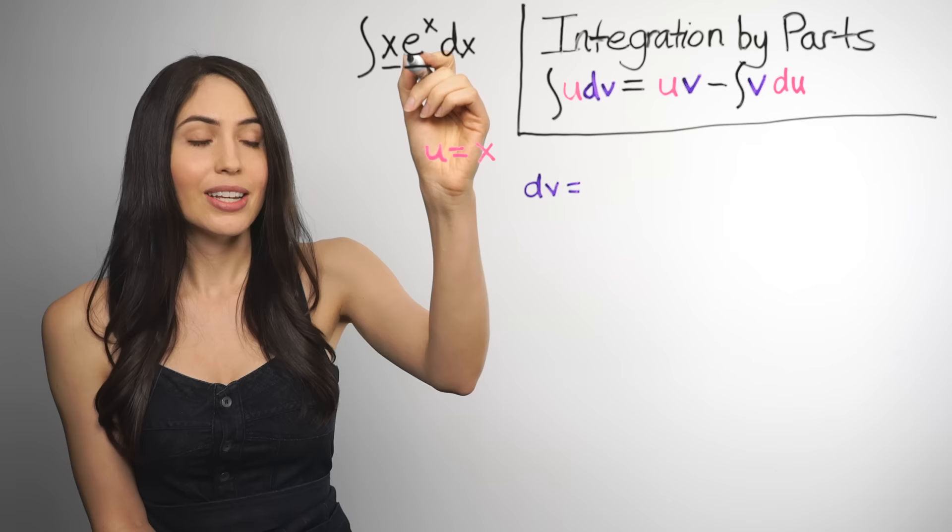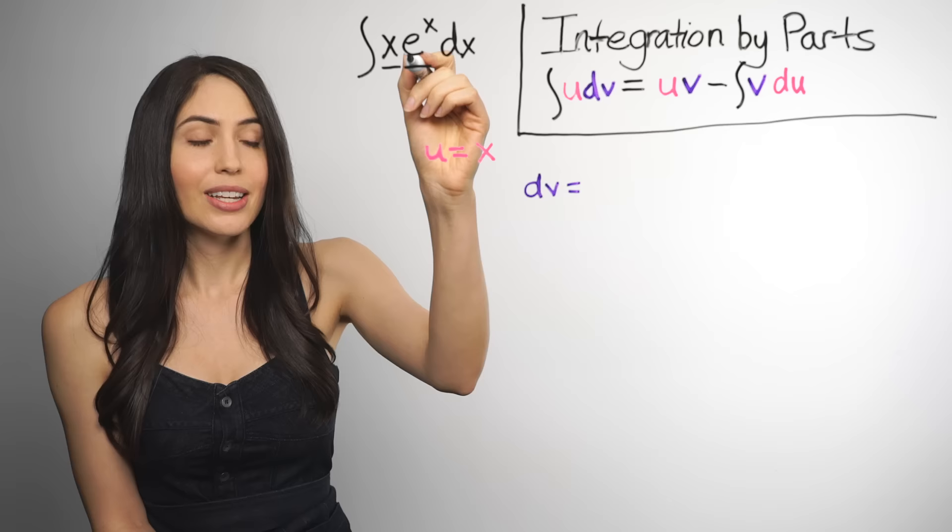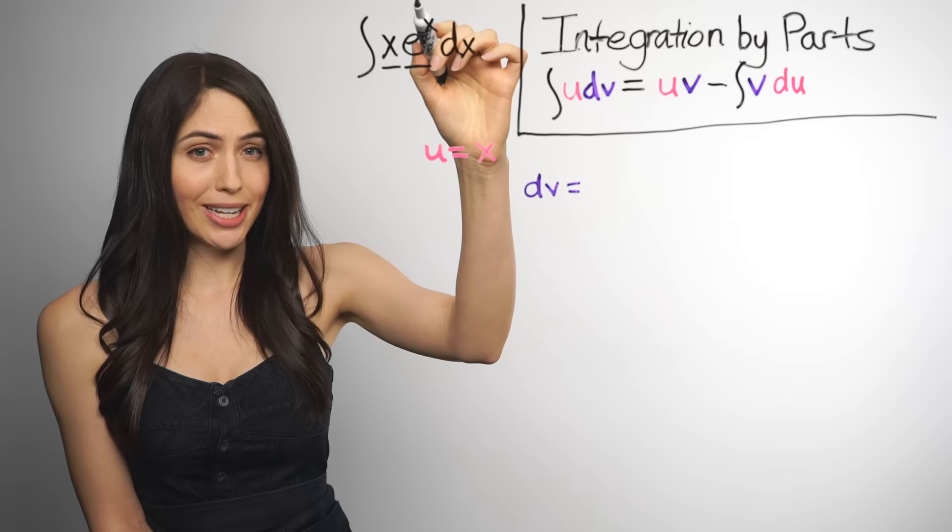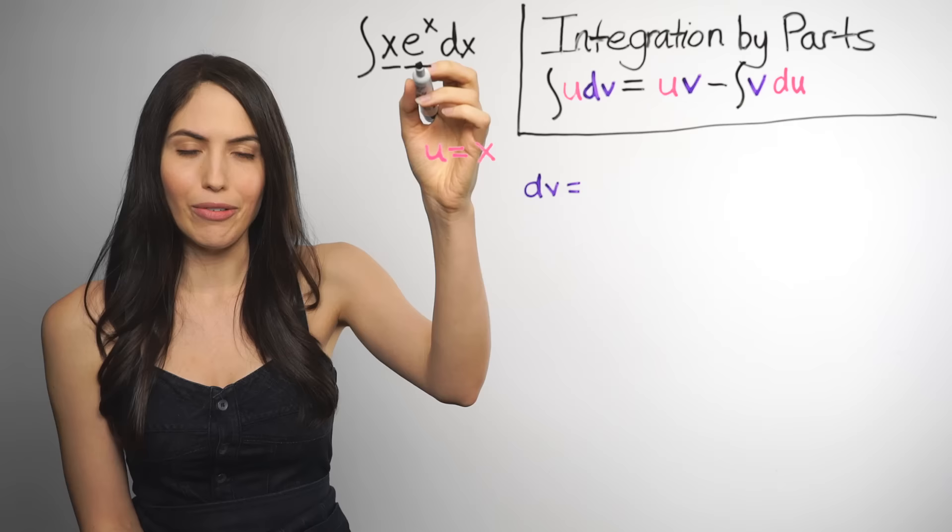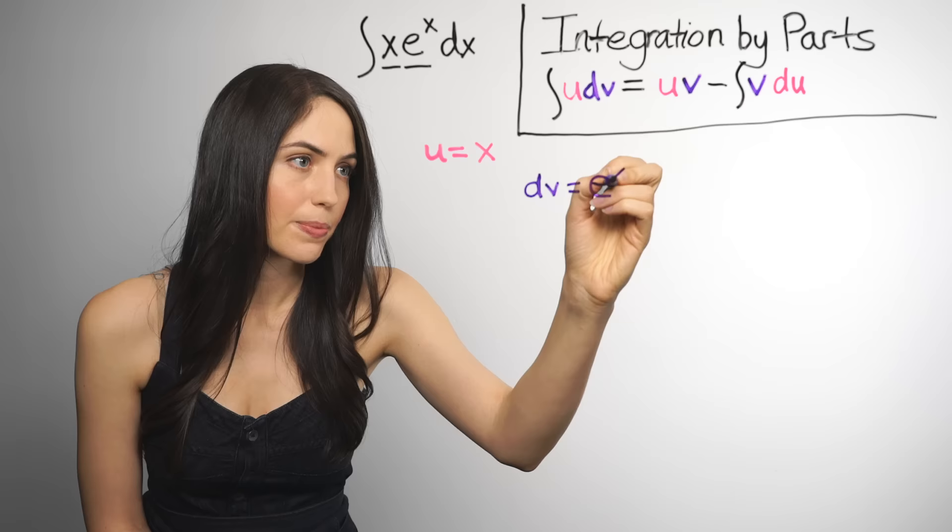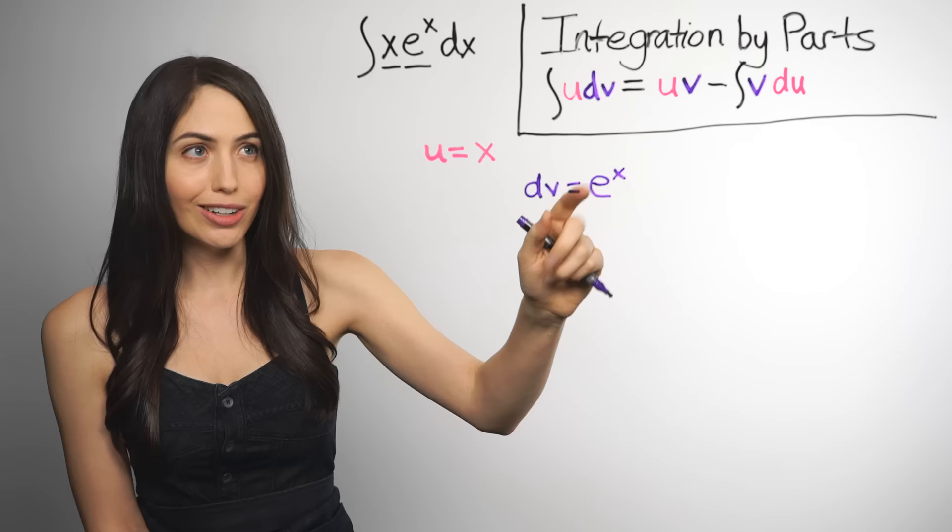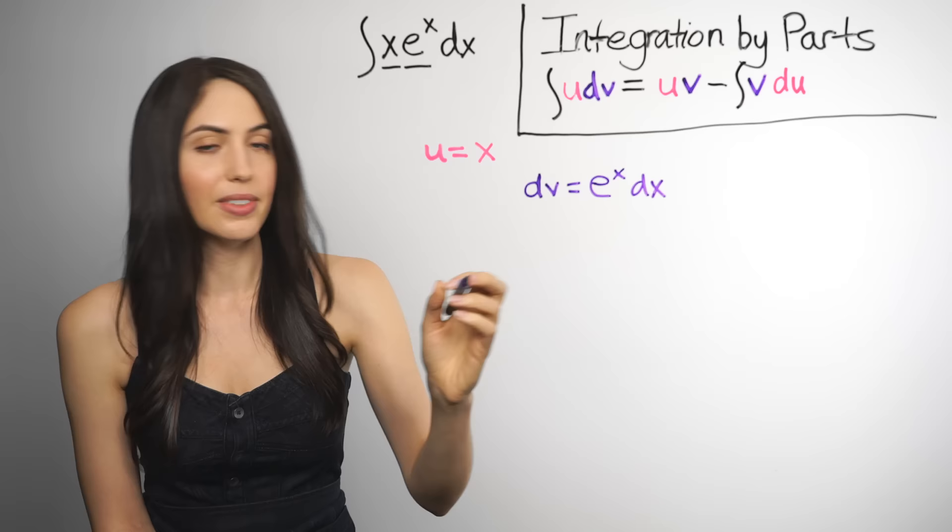And then the other factor, e to the x, should be our dv. Unless e to the x will get more complicated when we integrate it. Which it doesn't because the integral of that is just e to the x, which is not more complicated. So we're not in danger of that. Our dv is just the other factor, e to the x. And, this is important, whichever one you pick for dv also gets the dx because you need that differential there.